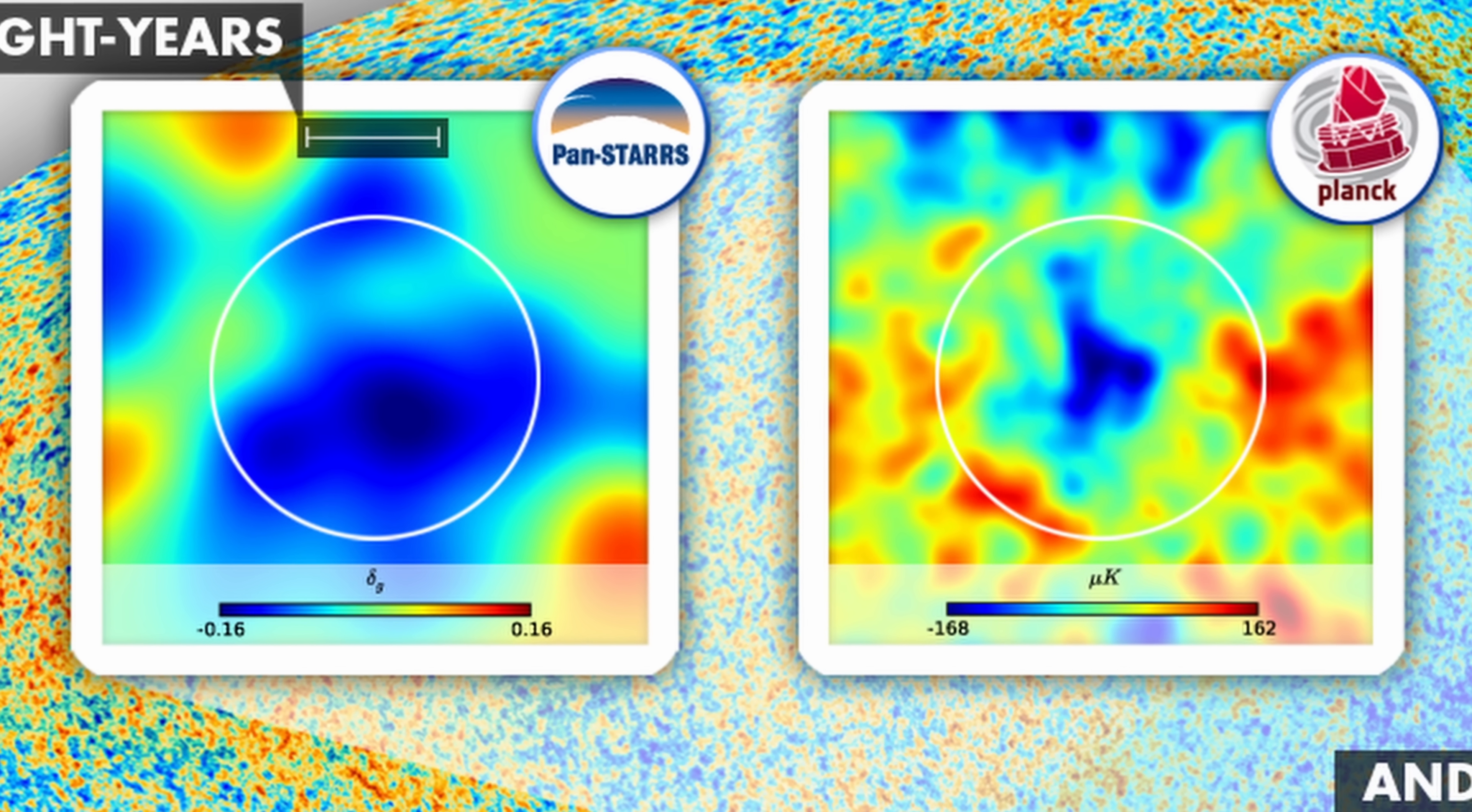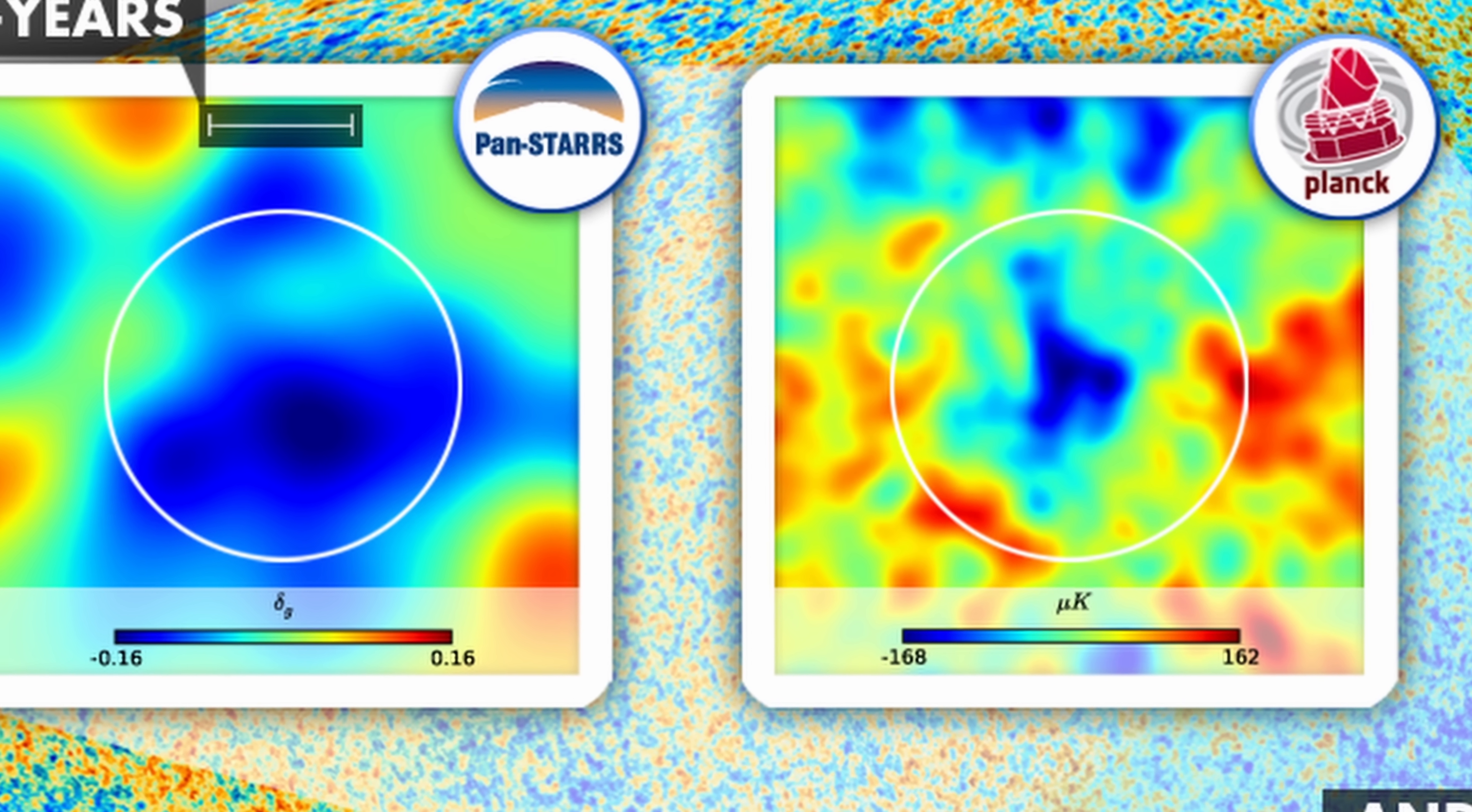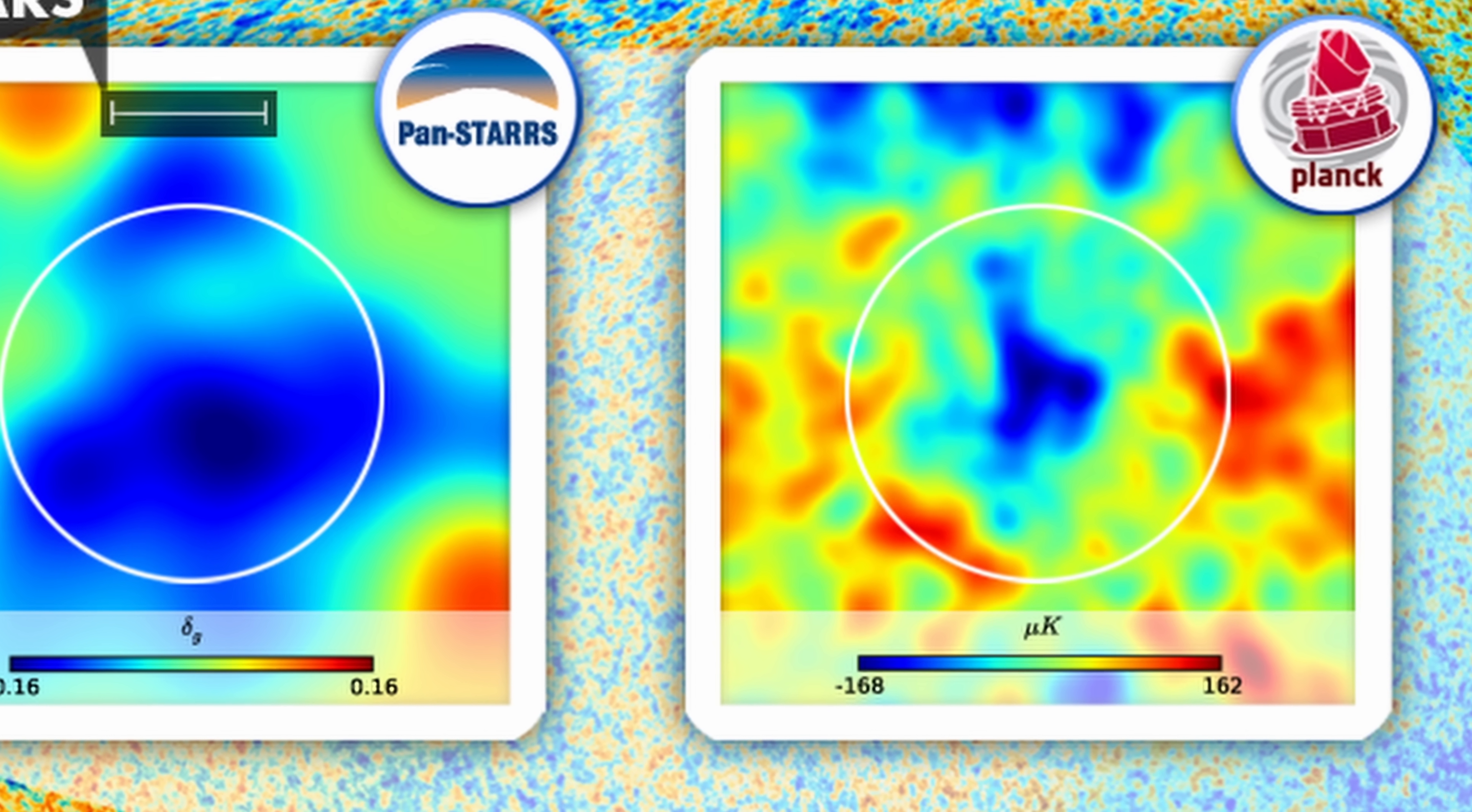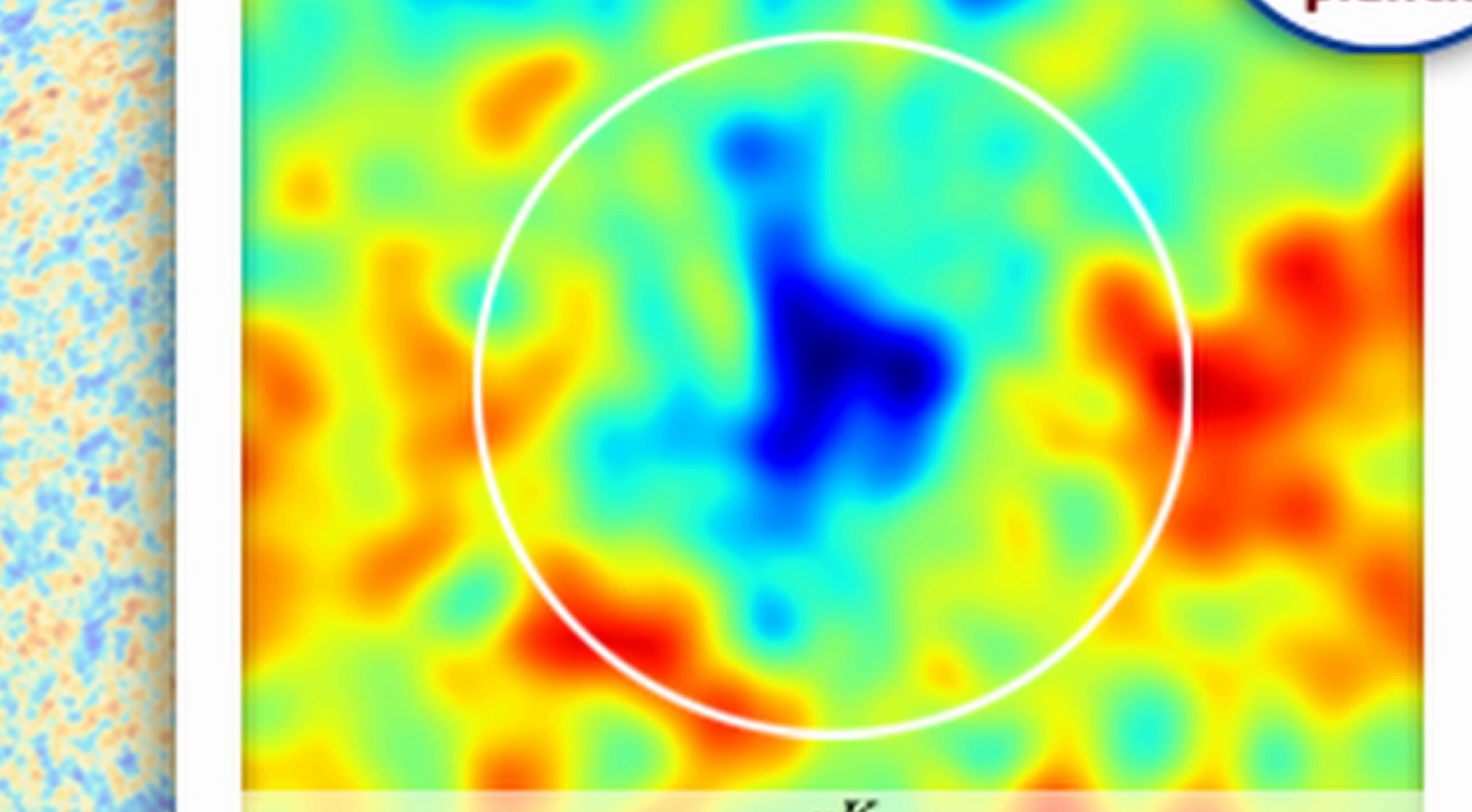But as we've discussed in previous videos, CMB is not perfectly uniform. It does have these tiny variations or anisotropies, which we believe were formed by some of the very early structures in the universe that created these slight temperature differences. For example, galactic clusters would make something appear just a little bit different, possibly making it appear just a little bit hotter. And likewise, galactic voids might make this light appear just a little bit colder.